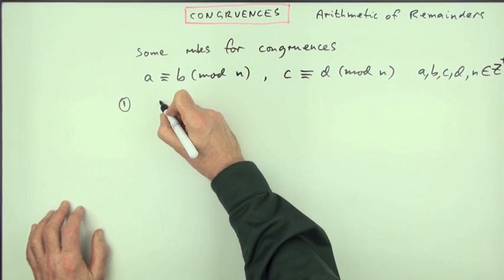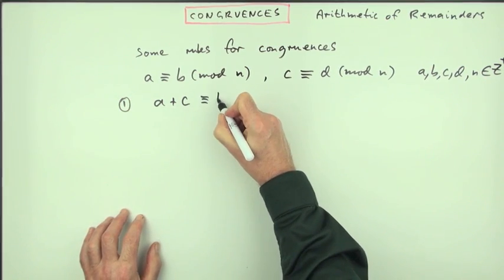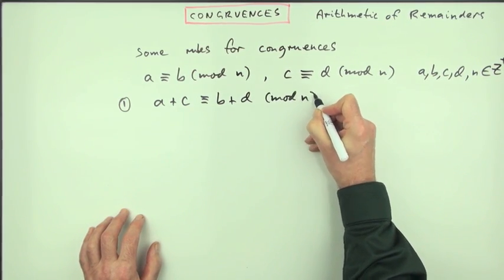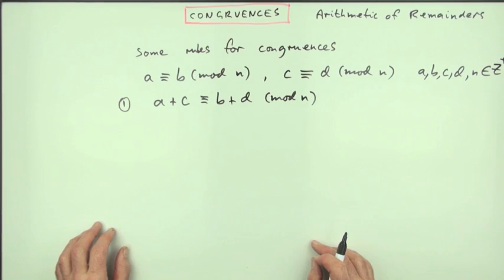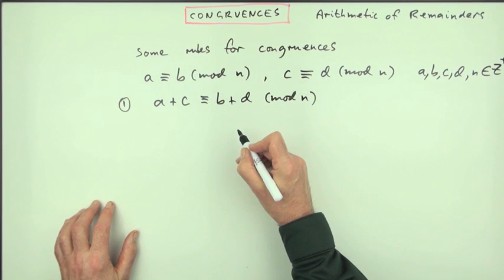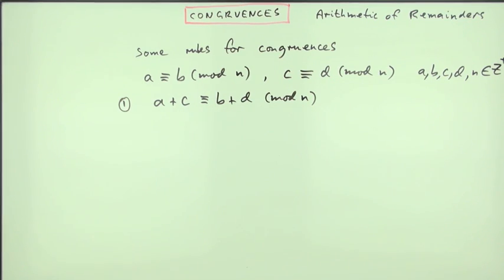The first one is, A plus C is congruent to B plus D mod N. These don't necessarily need to be the residues, but what it says effectively is the remainder of the sum is equal to the sum of the remainders.